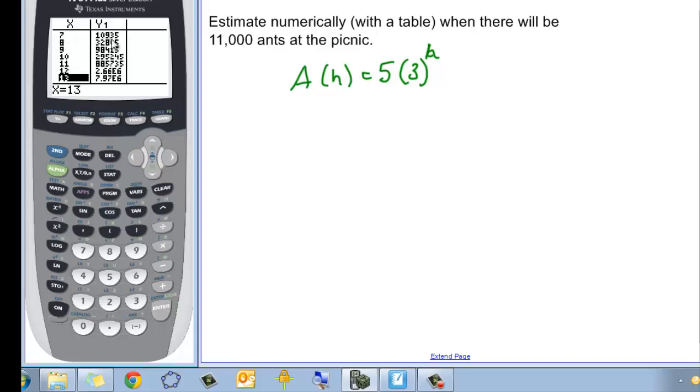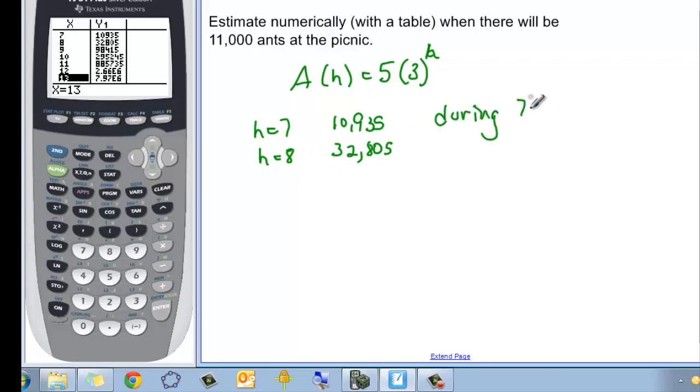At h equals seven, we have 10,935. And at h equal eight, we have 32,805. So somewhere in the seventh hour, and close to the seventh hour, it's going to be when we have this 11,000 ants. So during the seventh hour.